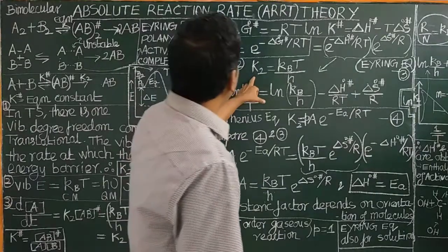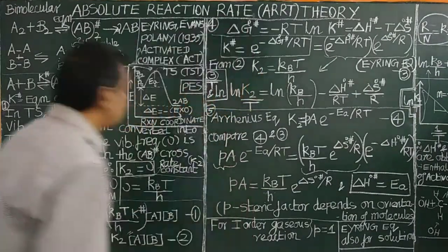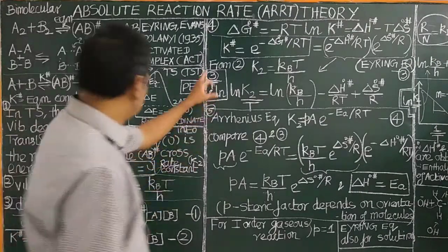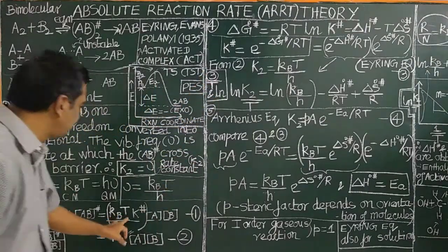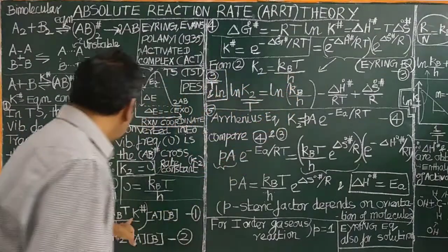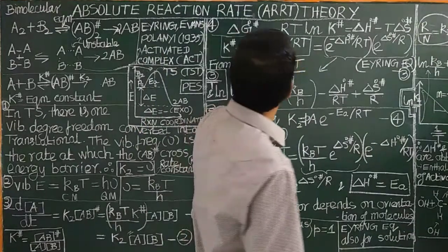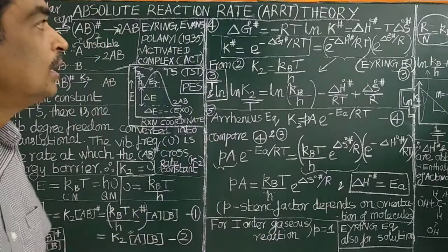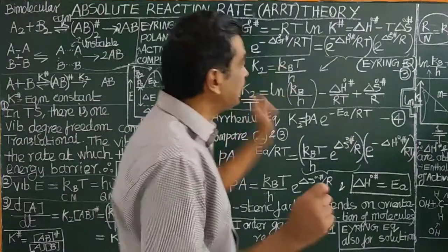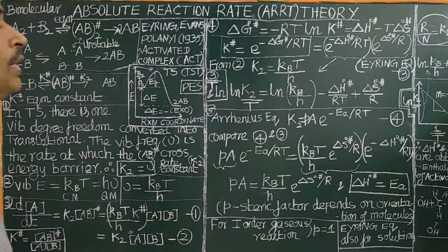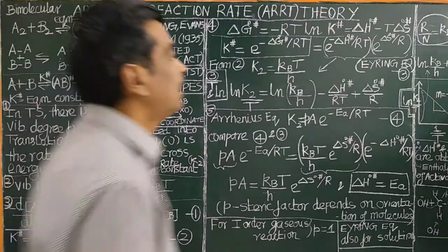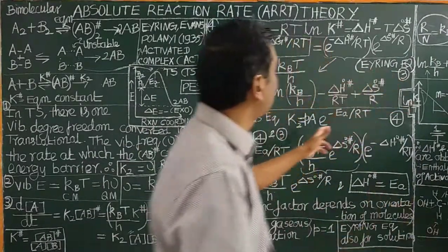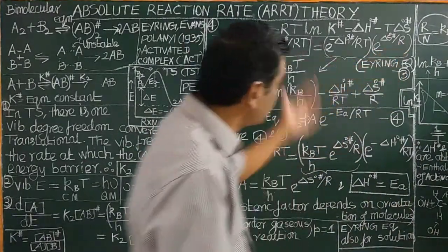Substituting into the expression for K2: K2 equals (kBT/h) × K‡, where K‡ is in exponential form involving delta H‡ and delta S‡. This equation is called the Eyring equation. The Eyring equation is very useful for determining the standard enthalpy of activation and the entropy of activation.